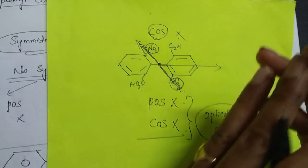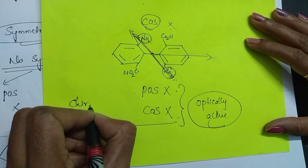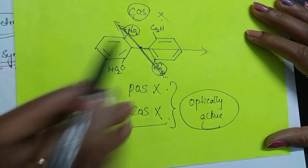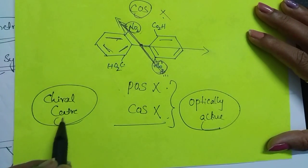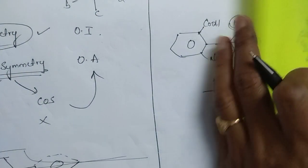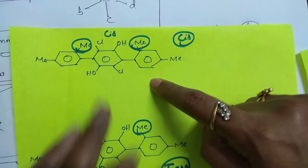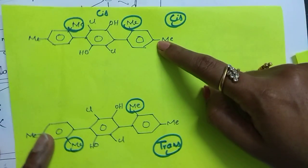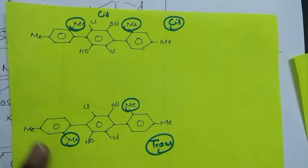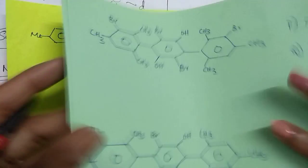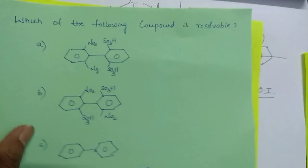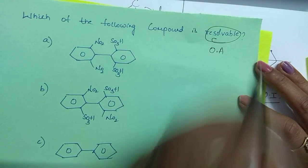Biphenyl compounds are special compounds — even though they are not having a chiral center (carbon surrounded by four different groups), and even though they have planarity, they still show optical activity. Now try this question on optical activity for a three-ring system. I am giving you another question also. Take a screenshot and try — 'resolvable' means whether optical activity is there or not.